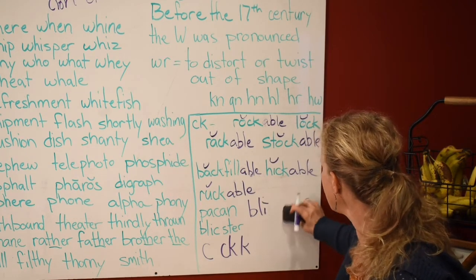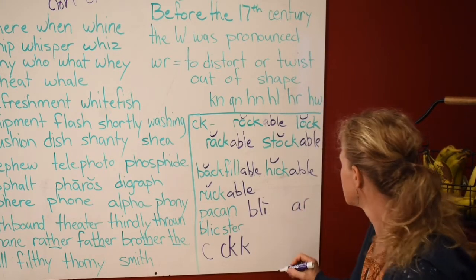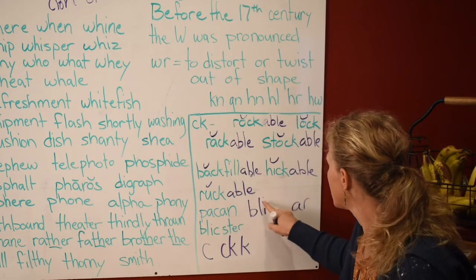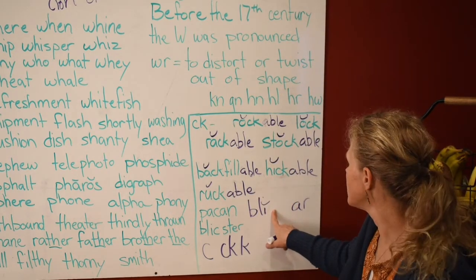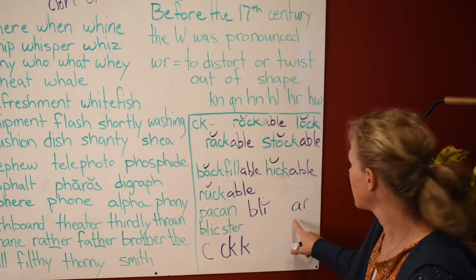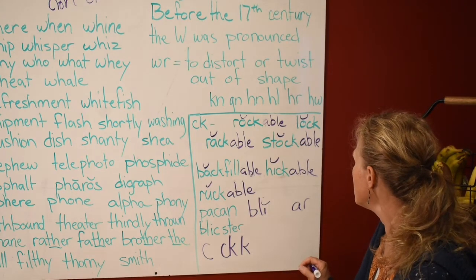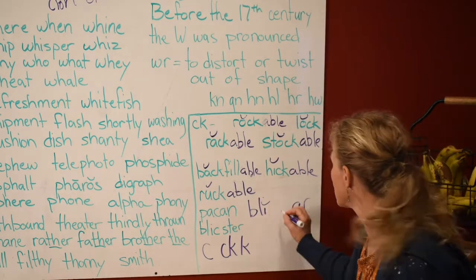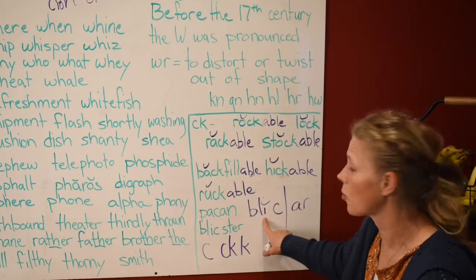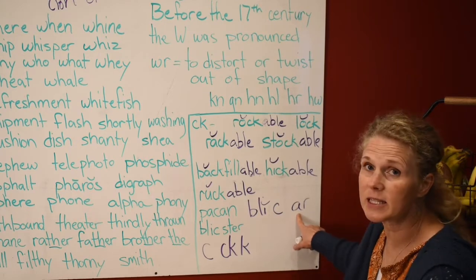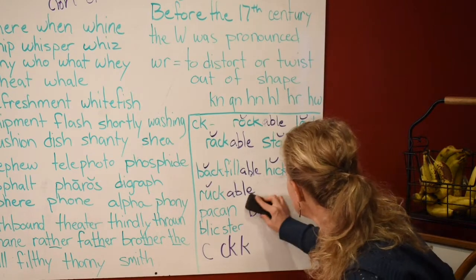Now let's put this as AR and push it back to a short sound — we want it to say 'blicker.' With an unaccented AR it will say 'blicker.' Can we use a C here? We can — it will break here to keep it short and we still use a C because this is not an E, I, or Y.